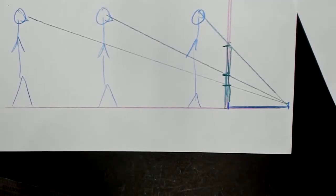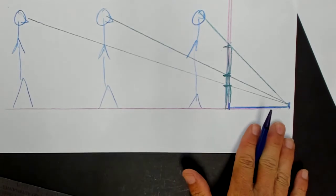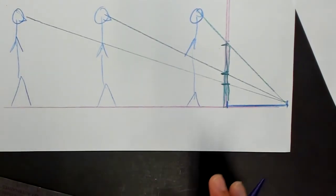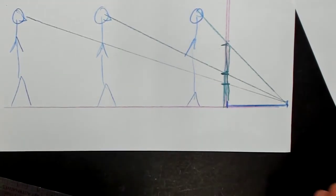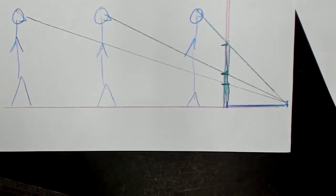So that's the relationship of the viewer, the station point, to the picture plane and the object when the object doesn't move, the picture plane doesn't move, but the viewer moves back and forth in different positions, and that's the effect it has on the thing that you're drawing.